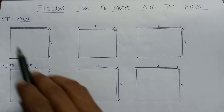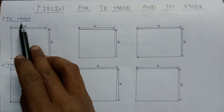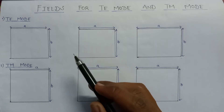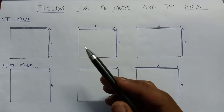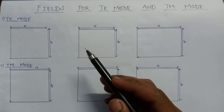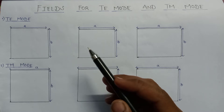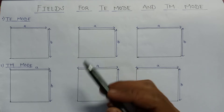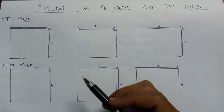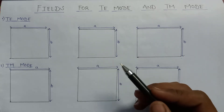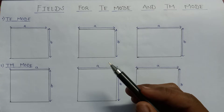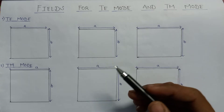Now, if we first talk about the TE mode, let us assume that our wave is propagating in the positive Z direction. Since it is positive Z direction propagation, our wave is also oriented having the X direction which is horizontally oriented and the Y direction which is vertically oriented.